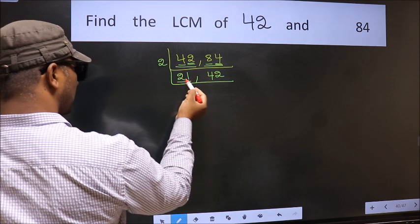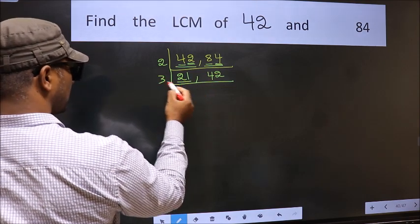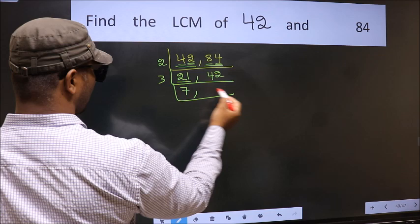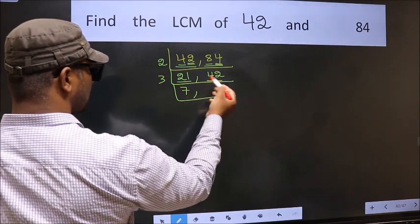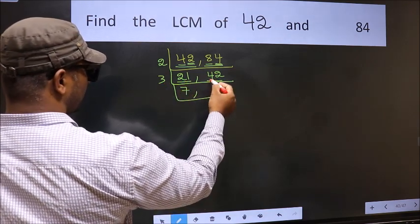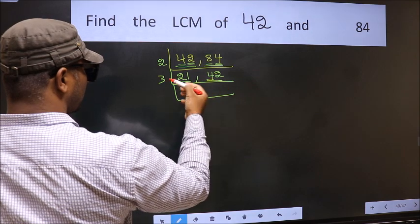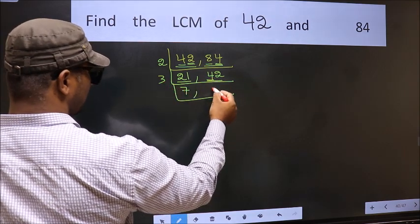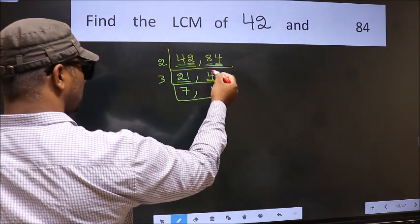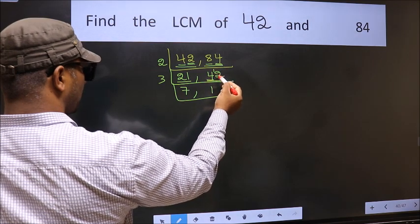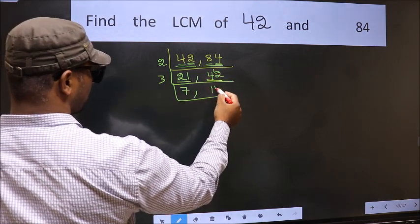Now here we have 21. 21 is 3 times 7 is 21. The other number 42 is divisible by 3. First number 4, a number close to 4 in 3 table is 3 times 1 is 3. 4 minus 3, 1 carried forward 12, when do we get 12 in 3 table? 3 times 4 is 12.